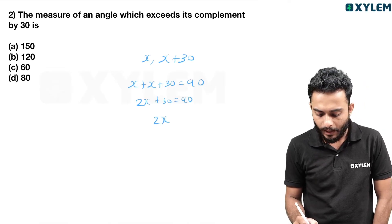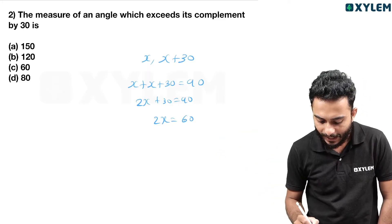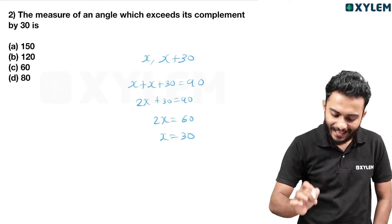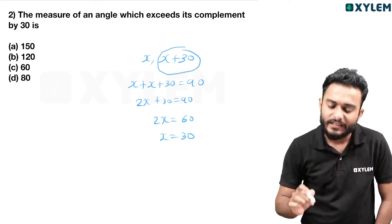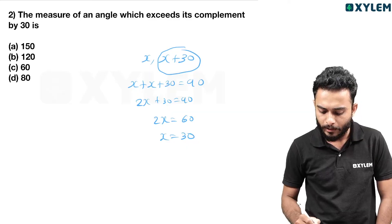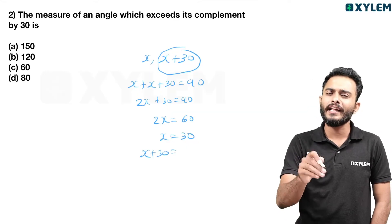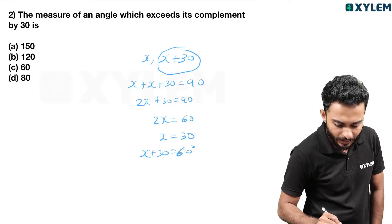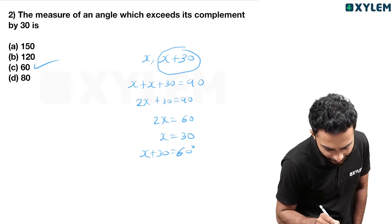The measure of the angle which exceeds its complement by 30. Let the angle be x. Then x plus 30 equals... solving gives 60 degrees. Option C.